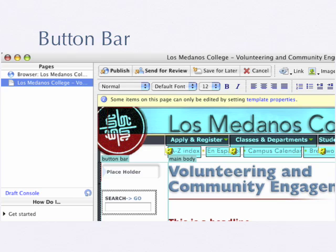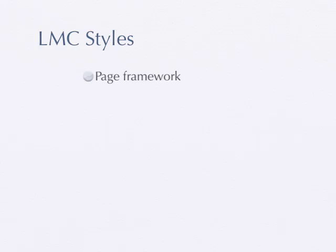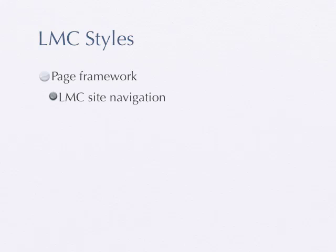When you get into Contribute, this is a screenshot of what it typically looks like — just the upper corner of the page. You can see the buttons along the top: Publish, Send for Review, Save for Later. Down in the lower right is a screenshot of a typical page for the LMC site, and over on the left are the pages you've checked out. The LMC website is set up with a basic framework — an outside shell that looks like the LMC website, and inside are the areas you can edit. The LMC site navigation along the top is not editable, and there's a sub-site navigation on the left with individual buttons to your pages.